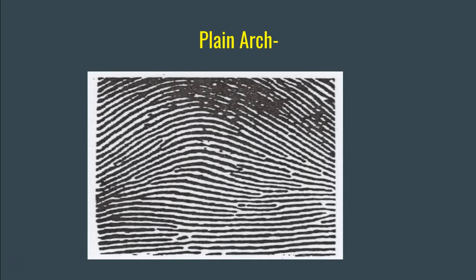Here's another good example of a plain arch. One of the difficulties with comparing plain arches is that oftentimes they have a severe lack of unique features. We can see that there are a lot of ending ridges in this print, but there are not a lot of bifurcations, dots, or short ridges. You can see how this might be a difficult fingerprint to compare versus one that has a lot of recurves and bifurcations. But this is also a good example of what constitutes a plain arch.